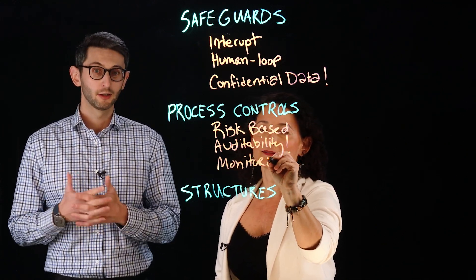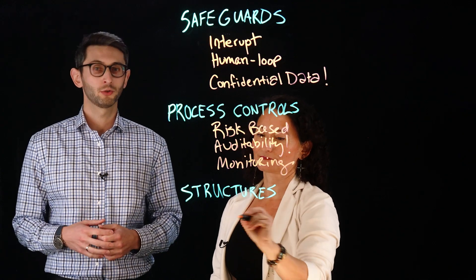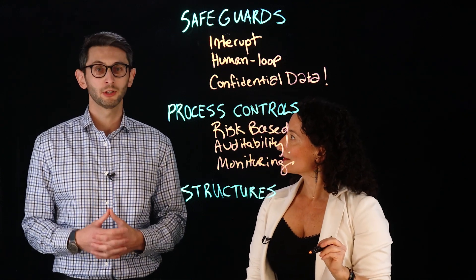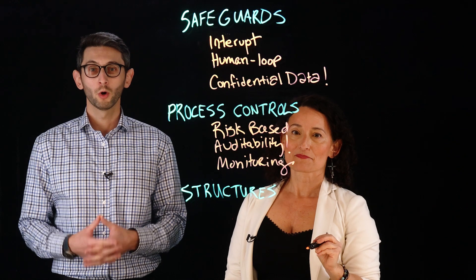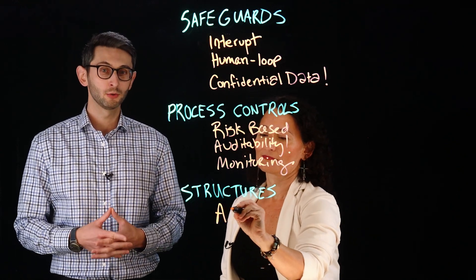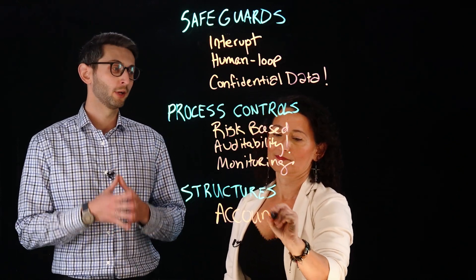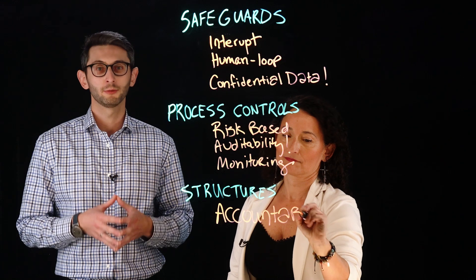And lastly, accountability and organizational structures. Who takes responsibility when AI decisions lead to harm? What regulations apply to your AI use cases? And how do we hold our vendors accountable for the AI's behavior?